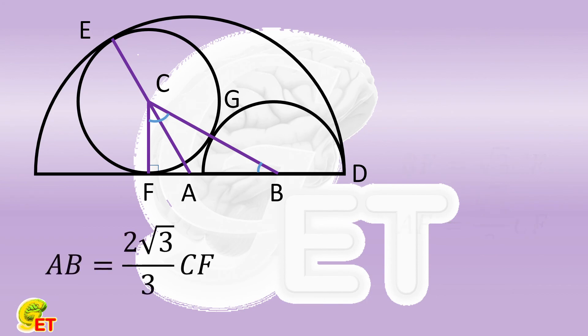AB is therefore two-thirds of square root of 3 times CF. AD is longer than AB by another length of CF. That is 2 times the square root of 3 plus 3. So the diameter of the semicircle is 4 times the square root of 3 plus 6.